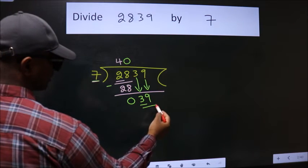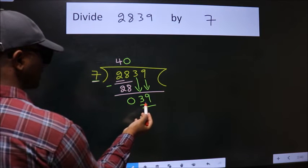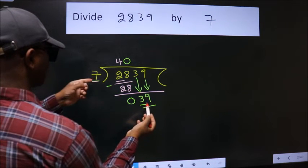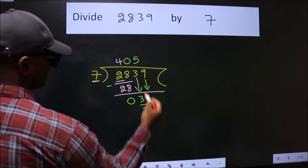So 39. A number close to 39 in seven table is seven fives 35.